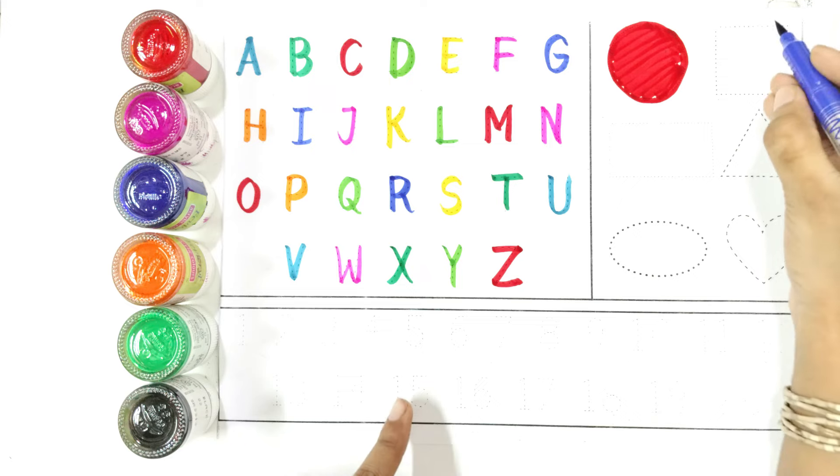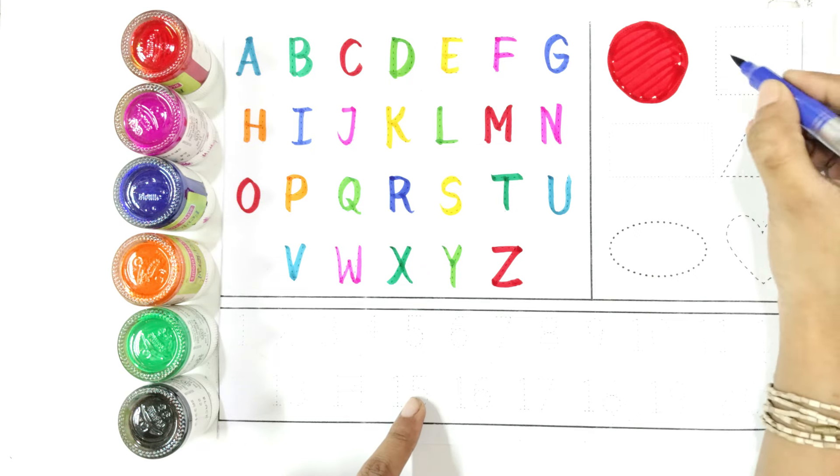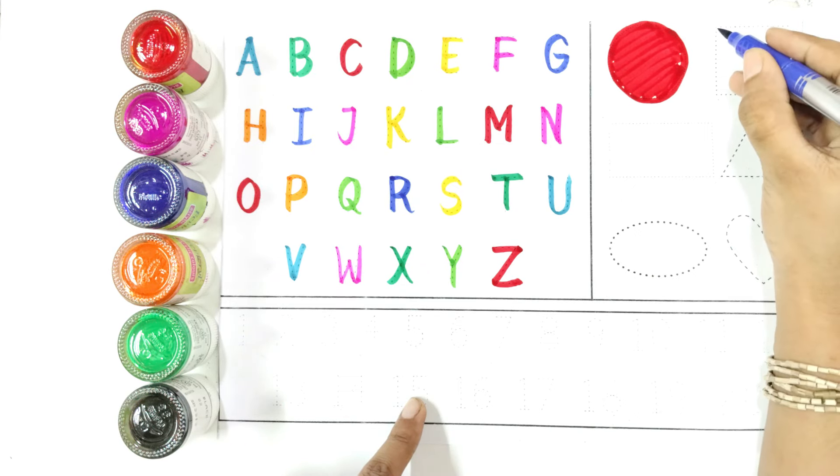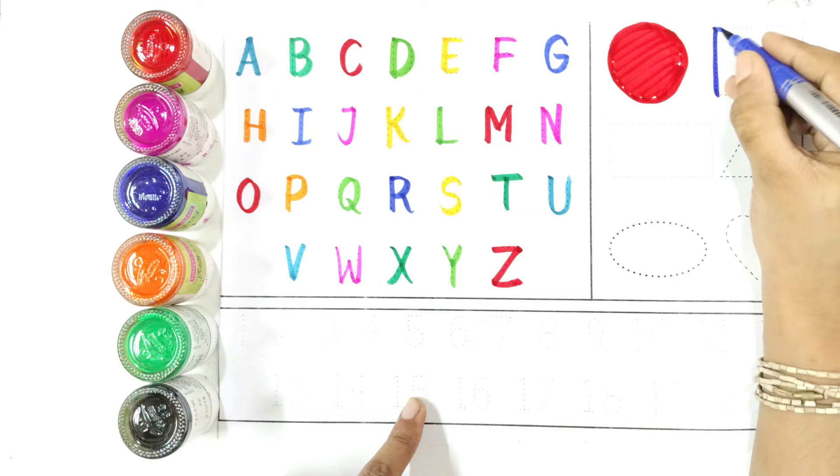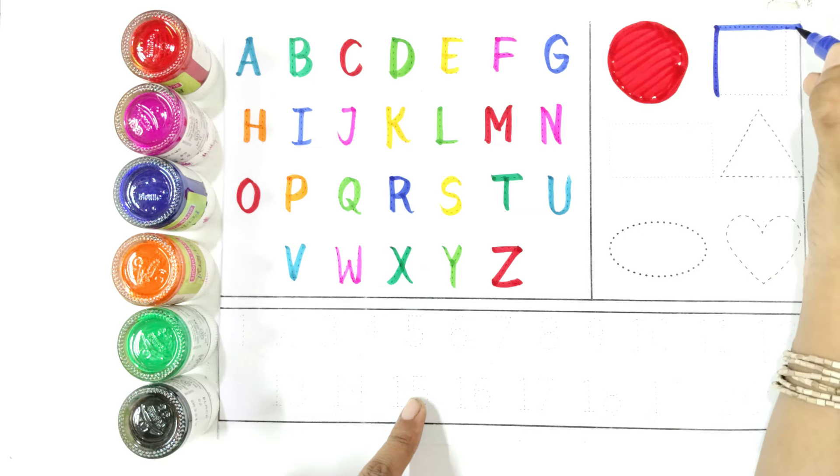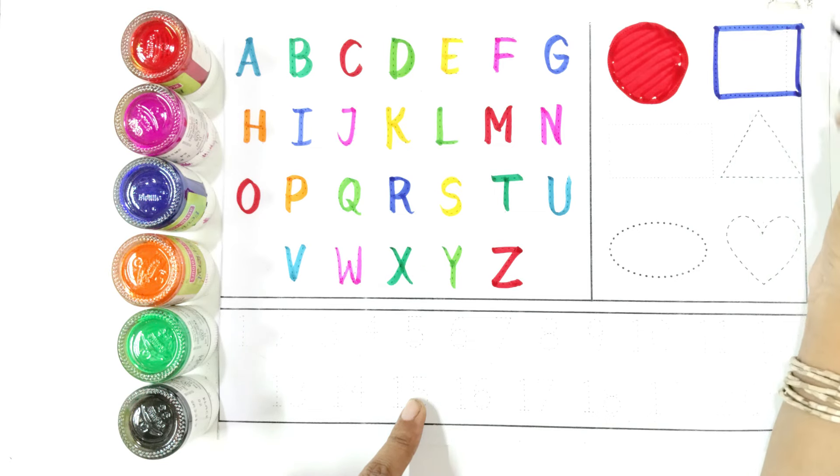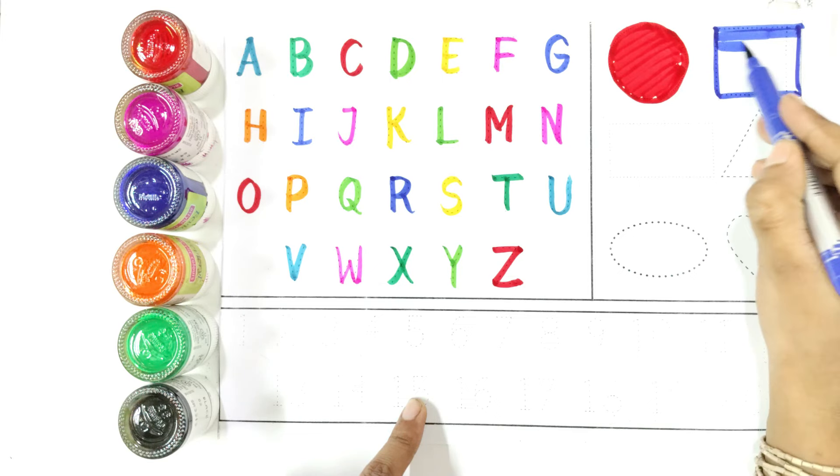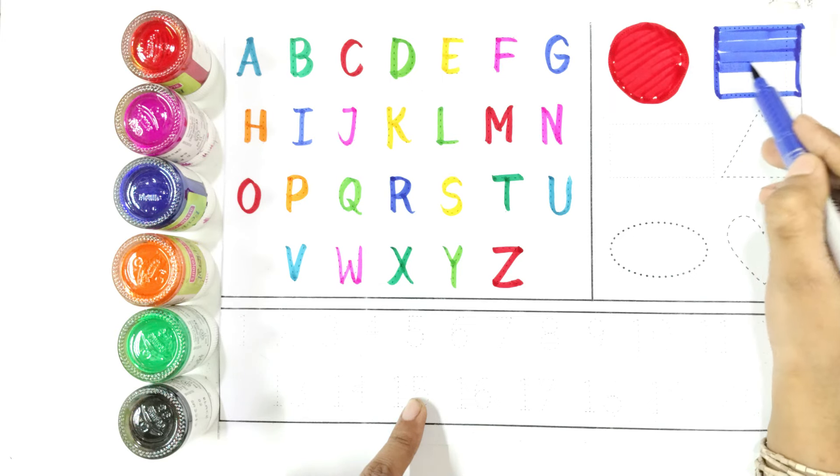Say with me the name of shape square. Draw with me square. Again say with me the name of shape square.